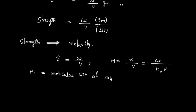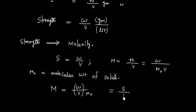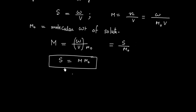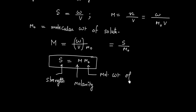Writing this expression: Molarity = (W/V) / M₀, and since W/V is strength, we get Molarity = Strength / M₀, or rearranging: Strength = Molarity × M₀, that is S = M × M₀, where S is strength, M is molarity, and M₀ is the molecular weight of the solute.